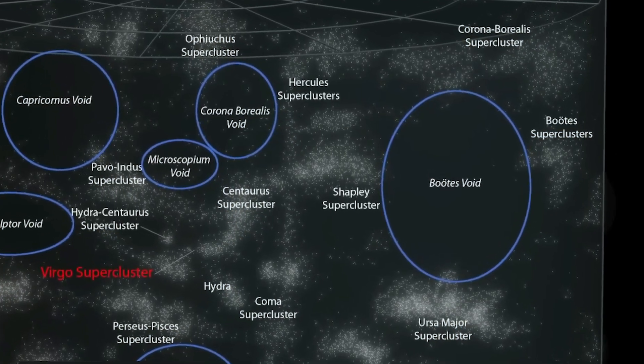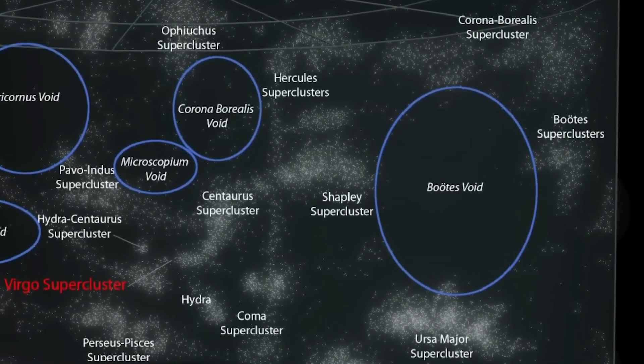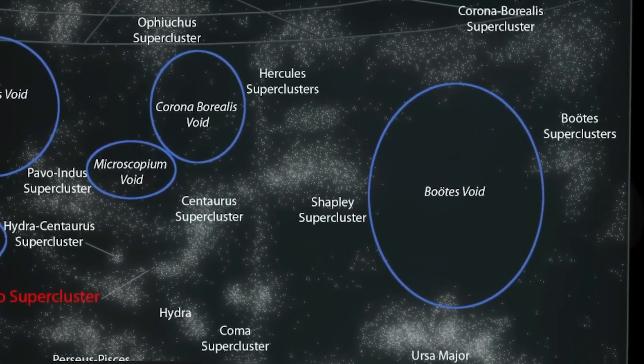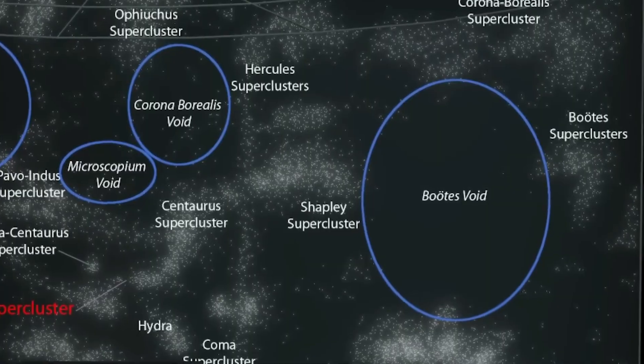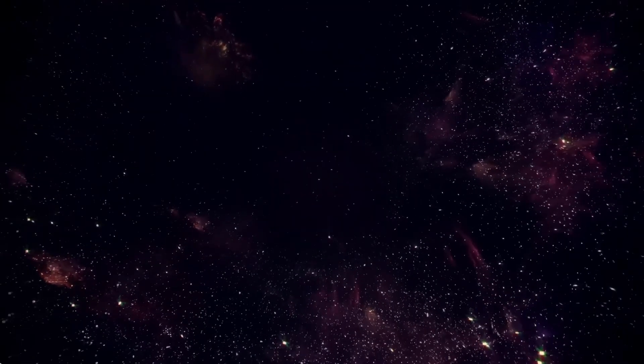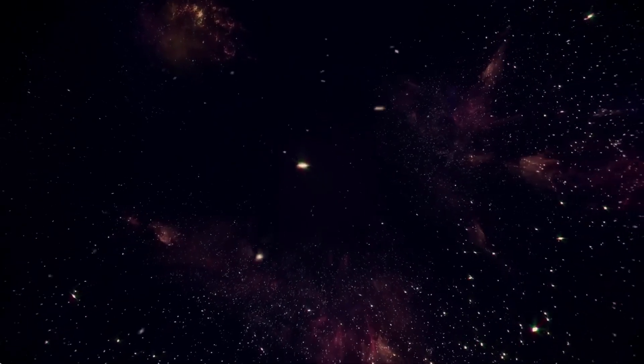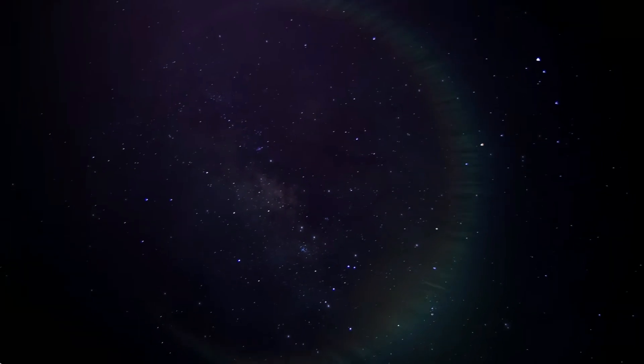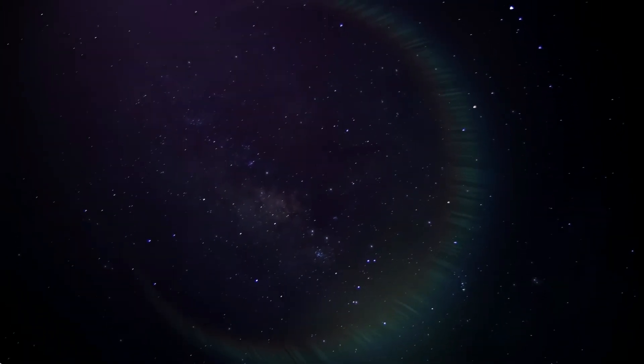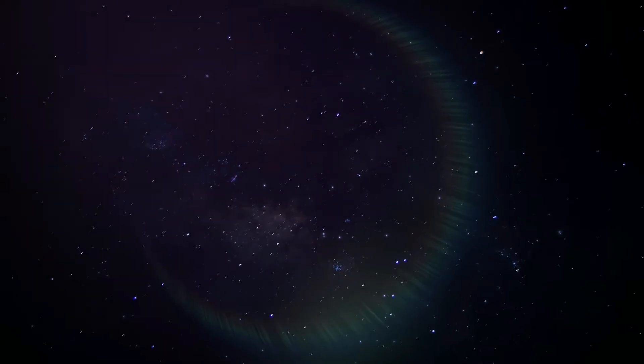if the Milky Way were floating inside the Boötes Void, we wouldn't even know other galaxies exist. It's so huge that if you traveled at the speed of light, it would still take you 330 million years to cross it. But here's where things get truly weird. Astronomers estimate that such a region should contain about 2,000 galaxies, yet inside the Boötes Void there are only 60.